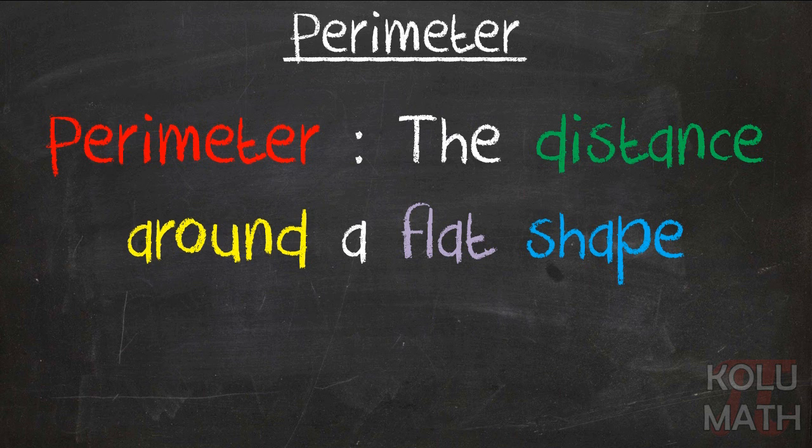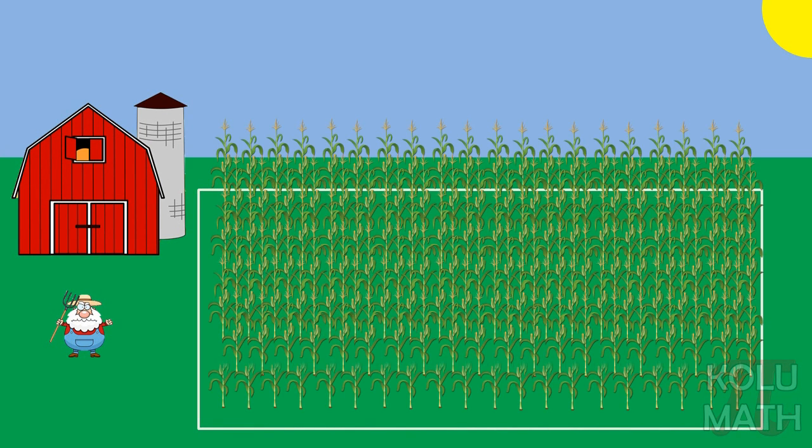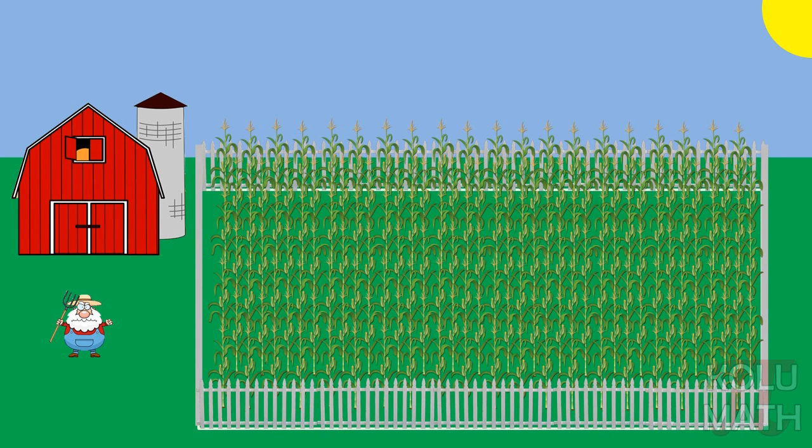One of the best ways to think about perimeter is to think about a farm on a sunny day. And there's the old farmer, and he's got a field that he wants to set up for planting corn. He also wants to build a fence around the field to keep the animals from the farm from eating his crops.